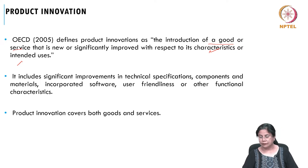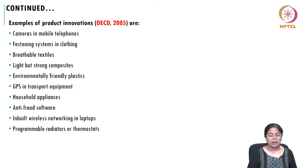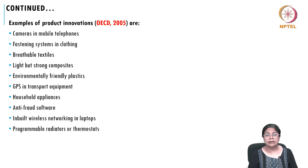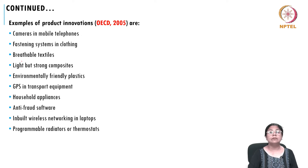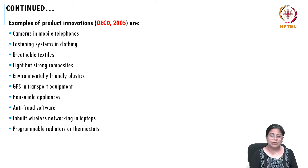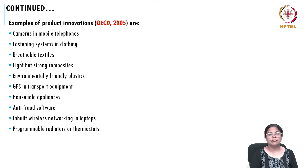Let us look at some examples of product innovation from the OECD manual itself: cameras in mobile telephones, fastening systems in clothing, breathable textiles, light but strong composites, environmentally friendly plastic, GPS in transport equipment, household appliances, anti-fraud software, inbuilt wireless networking in laptops, and programmable radiators or thermostats.